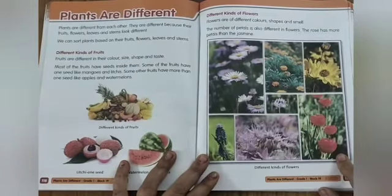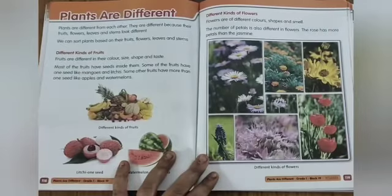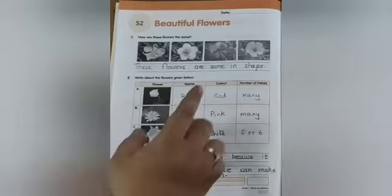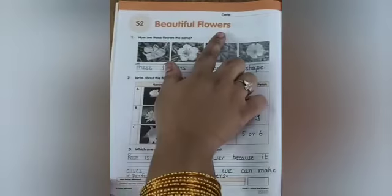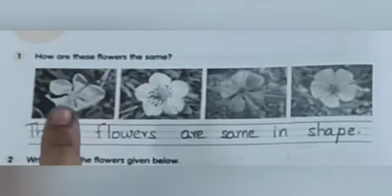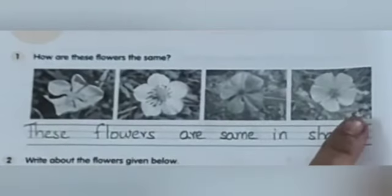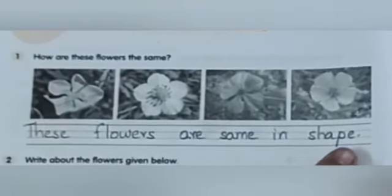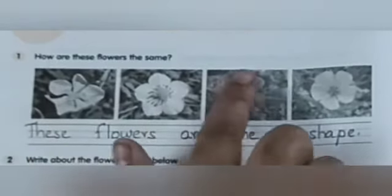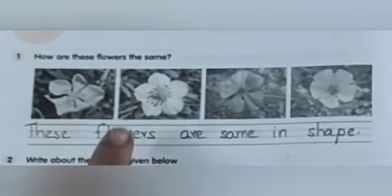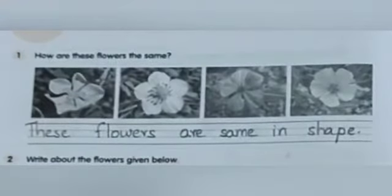Now open your workbook to page number 16. Put today's date — as to beautiful flowers. Number 1: How are these flowers the same? Can you see? They are same. These flowers are same in shape. Yes, the shapes are same. The petal shapes are same.